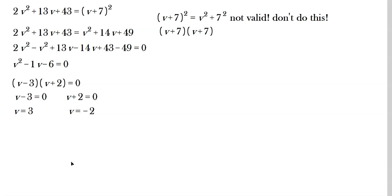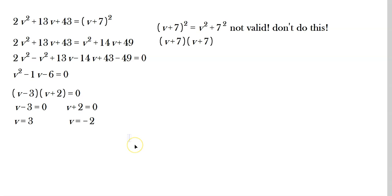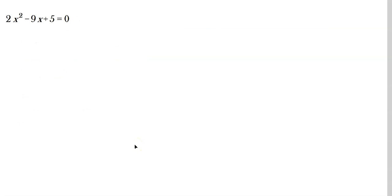You can check these solutions in the original equation — it should work out. Let's go to the next question: 2x squared minus 9x plus 5 equals 0. Let's do this one by the quadratic formula.